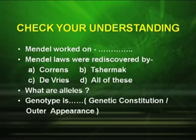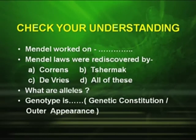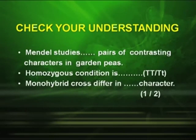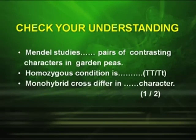Now, a session for you — check your understanding. Mendel worked on... The Mendelism was rediscovered by — Correns, Tschermak, De Vries, or all of these? What are alleles? Genotype is — genetic constitution or outer appearance? Mendel studied how many pairs of contrasting characters in garden pea? Homozygous condition is capital T, capital T or capital T, small t? And the monohybrid cross differs in how many characters — one or two?